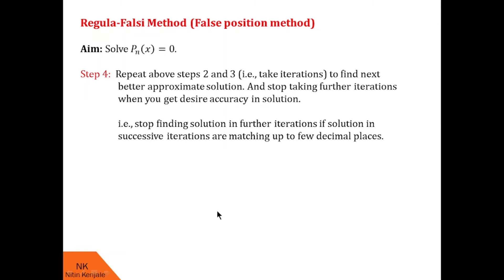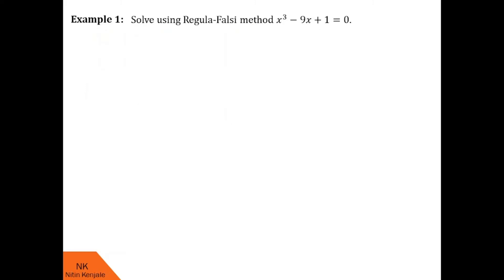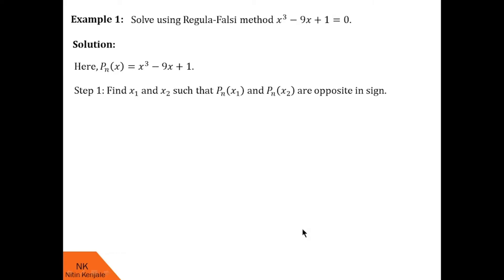Now let us use these steps to find the solution to algebraic and transcendental equations. This is our first example: solve using the Regula Falsi method the equation x³ − 9x + 1 = 0. This is an algebraic equation. We first denote f(x) = x³ − 9x + 1. Now we proceed to Step 1, which requires finding x1 and x2 such that f(x1) and f(x2) are opposite in sign.